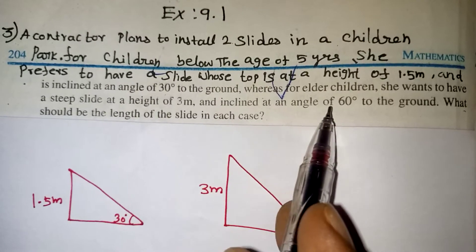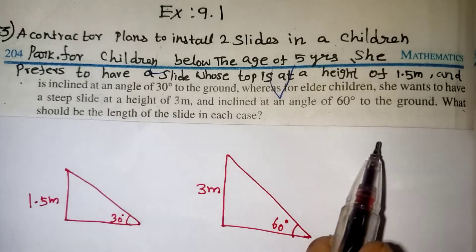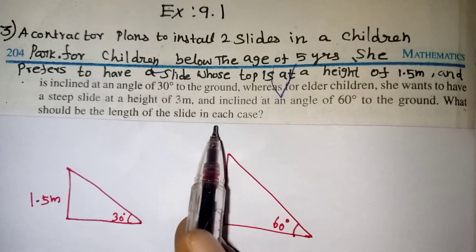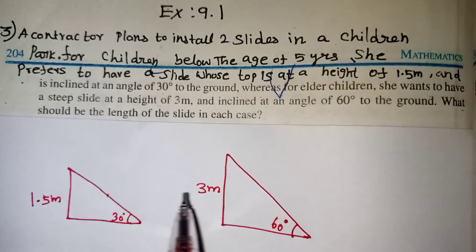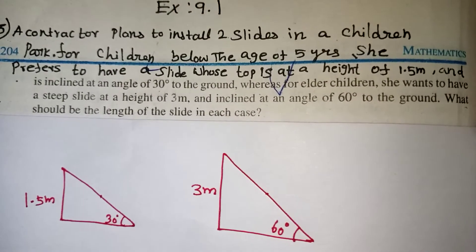And the inclined angle is 60 degree. This angle is also more. To the ground. What should be the length of the slide in each case? So this is a slide. This length only they are asking us.